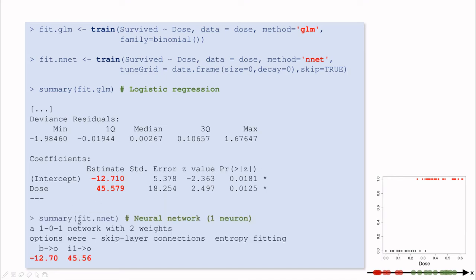What if we compute the summary of the neural network? As you can see here, this is the bias going to the output, and this is the weight for the input translating to the output. And the numbers are the same. Why are they the same? Because we have the same activation function and the same topology.